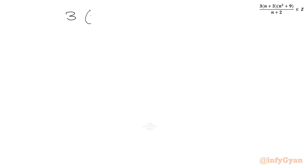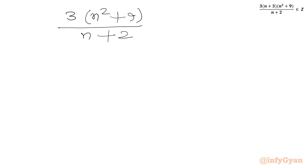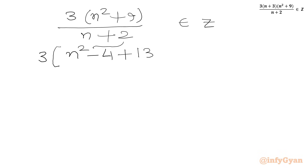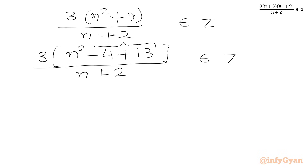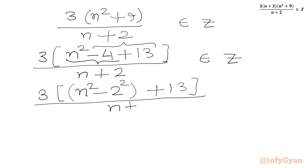We write 3 times (n²+9) over (n+2) must be an integer. We rewrite n²+9 as n² minus 4 plus 13, since 13 minus 4 equals 9. So we have 3 times (n² minus 4 plus 13) over (n+2). We can factor n²-4 as n²-2², giving us 3 times (n²-2²) plus 13 divided by (n+2) must be an integer.